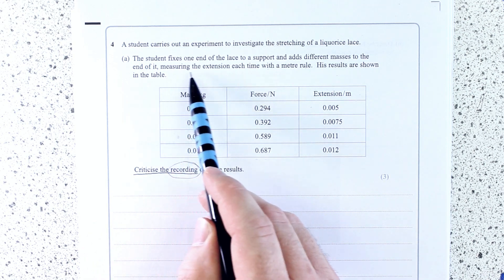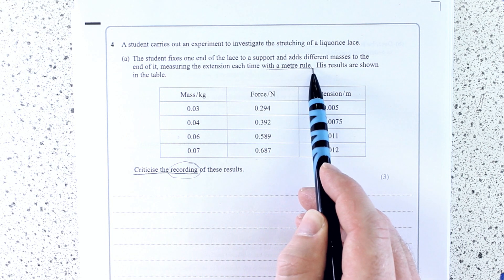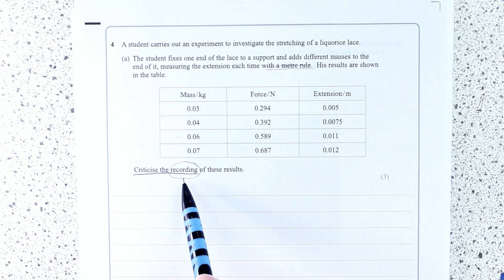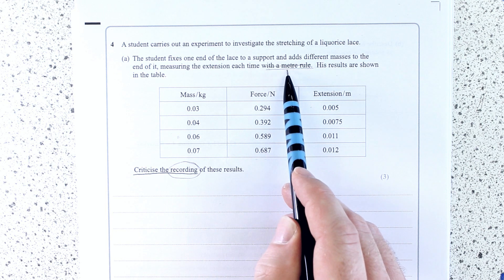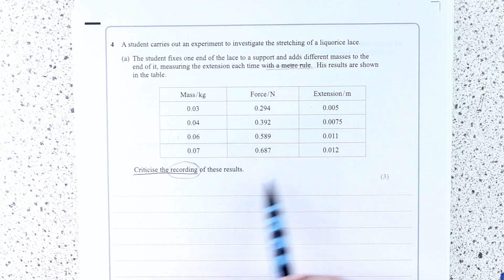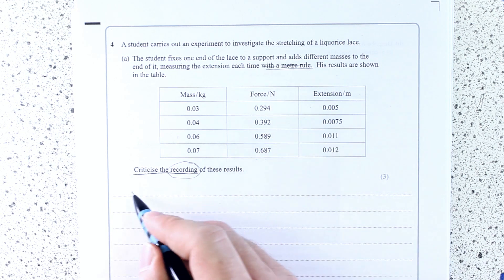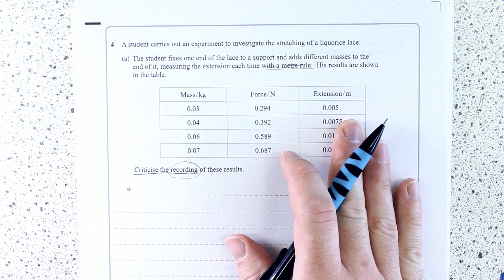If you read up here, measuring the extension each time with a meter rule, we're talking about the recording of it. We're not talking about how it's measured. We're not talking about the accuracy. We're talking about the way they've been recorded down. So let's get three points from this table.